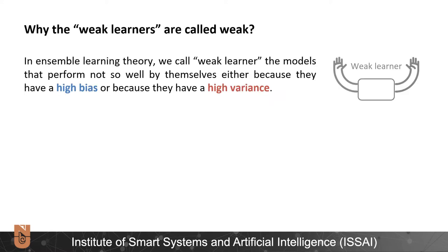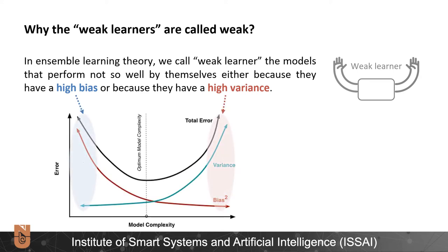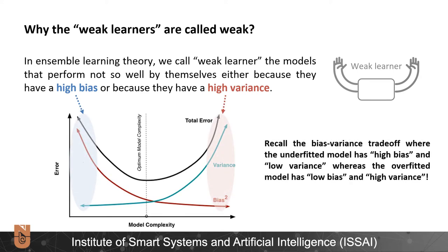In ensemble learning, we call weak learners the models that perform not so well by themselves, either because they have high bias or because they have high variance. Recall the bias-variance tradeoff where the underfitted model has high bias and low variance, and the overfitted model has low bias and high variance.